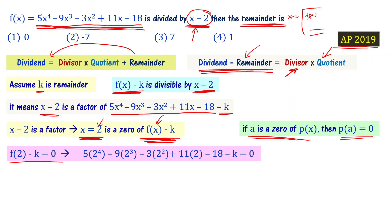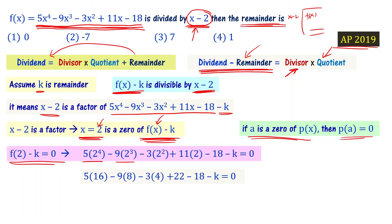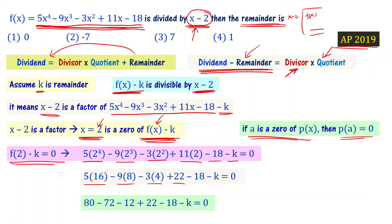Substituting x equal to 2: f of 2 minus k equals 0. That gives us 5 times 2 to the power 4 minus 9 times 2 cubed minus 3 times 2 squared plus 11 times 2 minus 18 minus k equals 0. This simplifies to 5 times 16 minus 9 times 8 minus 3 times 4 plus 11 times 2 minus 18 minus k equals 0.